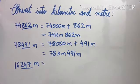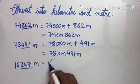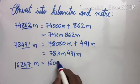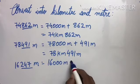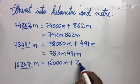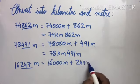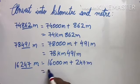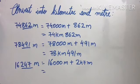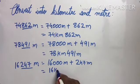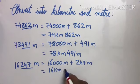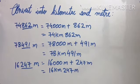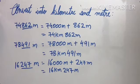Sixteen thousand two hundred and forty-seven meters: we separate the last three digits, giving sixteen thousand meters plus two hundred and forty-seven meters. Sixteen thousand meters is sixteen kilometers, so our answer is sixteen kilometers and two hundred and forty-seven meters.